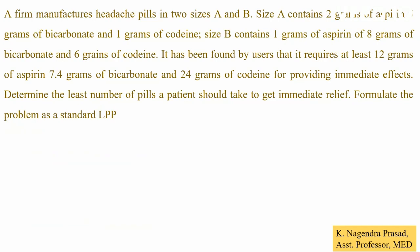In step 3, we have to identify the constraints. Observe the data and note it down. The second sentence states that size A contains 2 grams of aspirin, 5 grams of bicarbonate and 1 gram of codium. Similarly, size B contains 1 gram of aspirin, 8 grams of bicarbonate and 6 grams of codium. We have to note down this data in a tabular column.